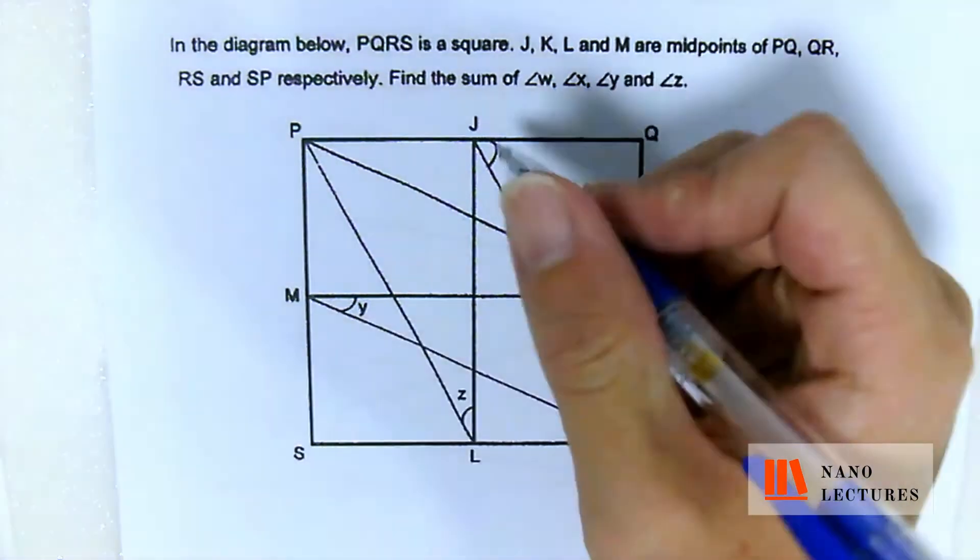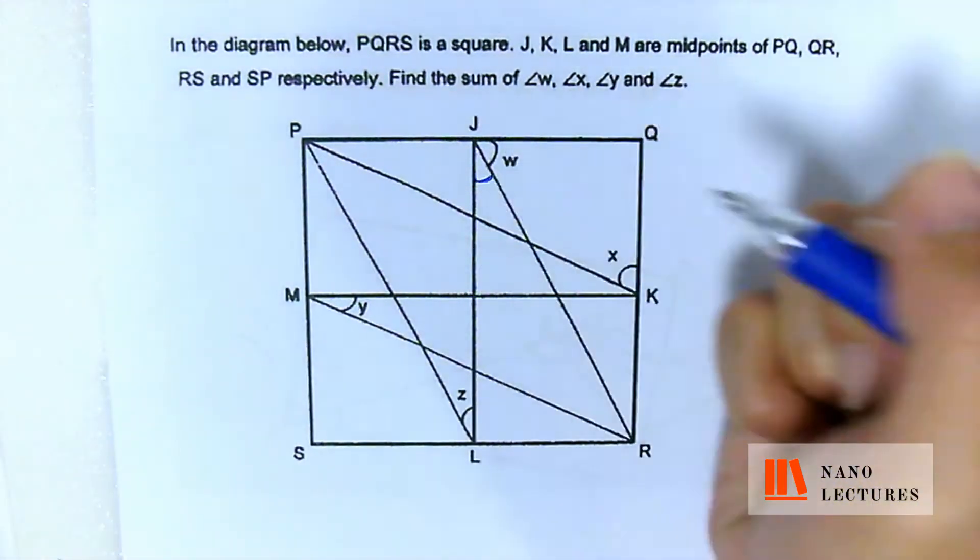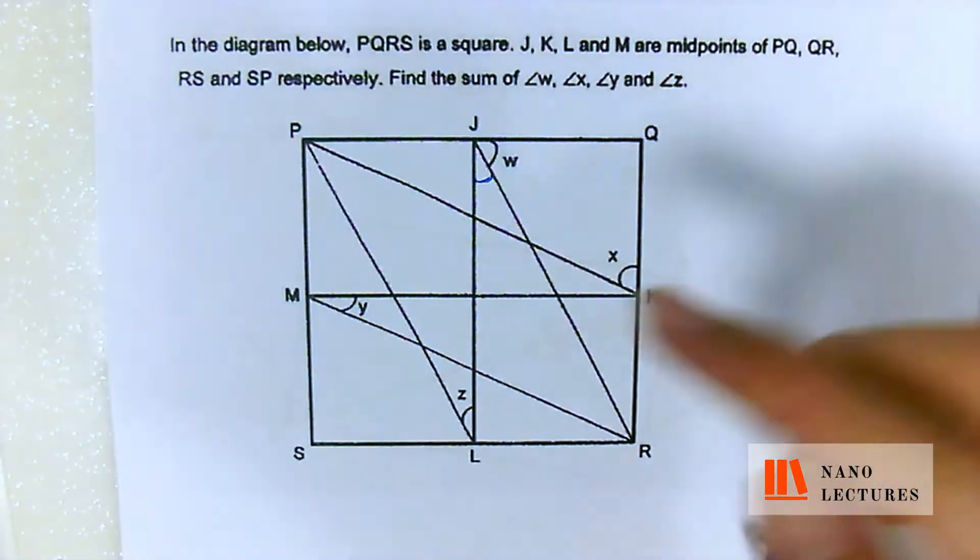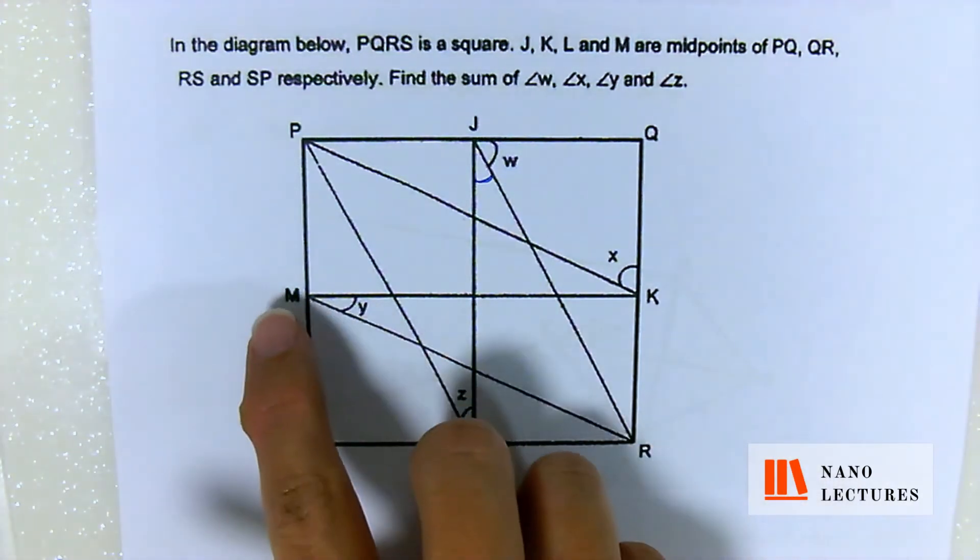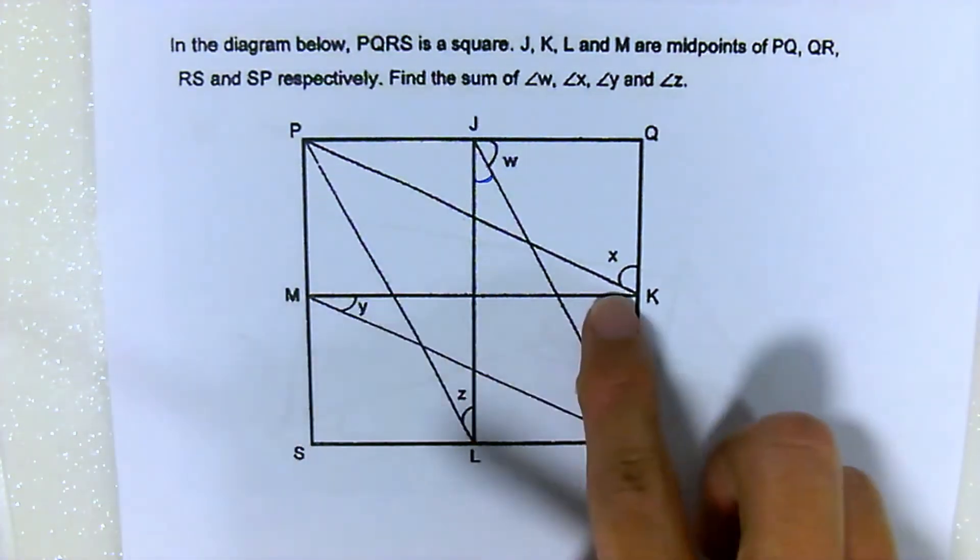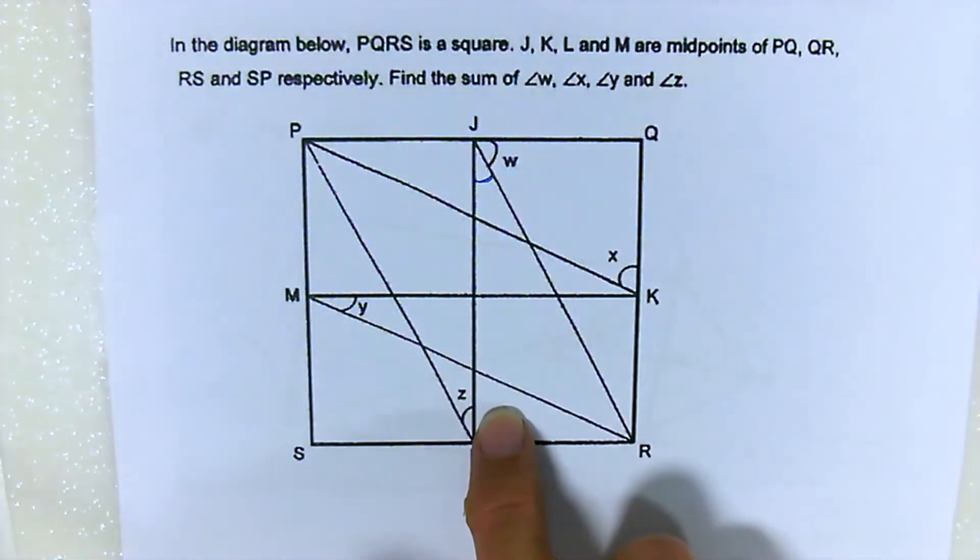This Y is actually equal to this angle. How do I know? Number one, MR is equal to RJ. This is the first clue. Second clue, your MK is actually equal to LJ.